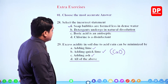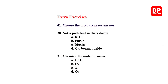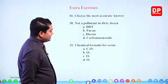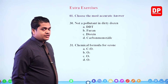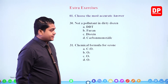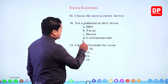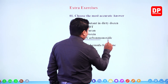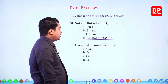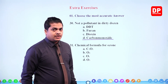Next: not a pollutant in the dirty dozen — DDT, furan, dioxin, or carbon monoxide. DDT, furan, and dioxin are all included in the dirty dozen. Carbon monoxide is not a pollutant contained within the dirty dozen.